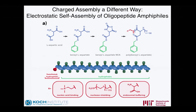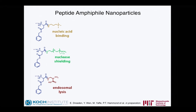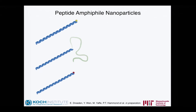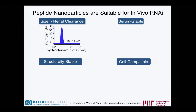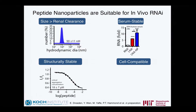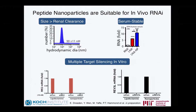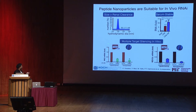The idea is to package siRNA using these systems and use them as a co-treatment with a chemotherapy drug. These three macromolecules don't do anything unless we introduce a negatively charged material like siRNA. But when we do, we create very compact nanoparticles with a polyethylene oxide stealth layer, allowing us to administer them in the body. They have a size of about 90 nanometers, are serum stable, structurally stable, and cell-compatible. We see that they are competitive with lipid-based systems in terms of silencing efficiency.